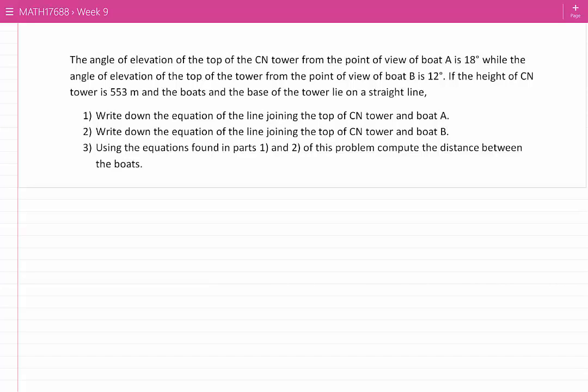The angle of elevation of the top of the CN Tower from the point of view of boat A is 18 degrees, while the angle of elevation of the top of the tower from the point of view of boat B is 12 degrees.